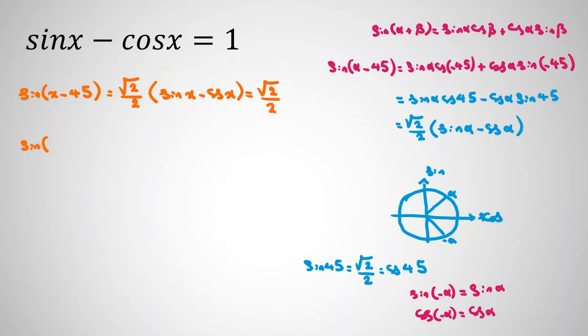So, sin x minus 45 equal to root 2 over 2. Let me tell you an important rule. When you see sin of two angles are equal, we know sin root 2 over 2 is also sin 45.